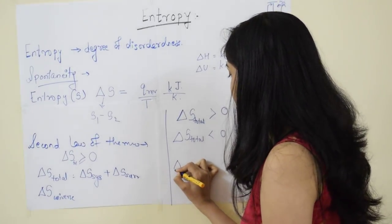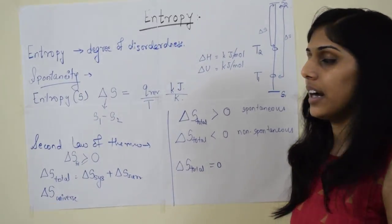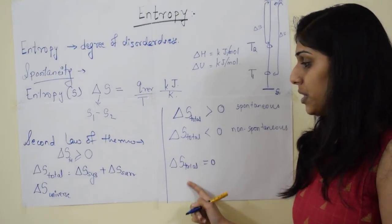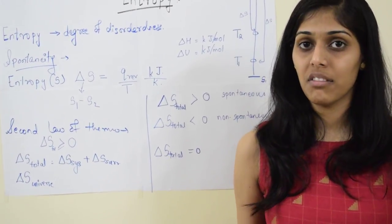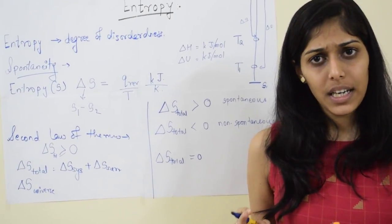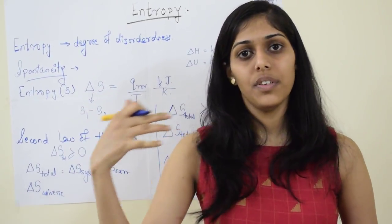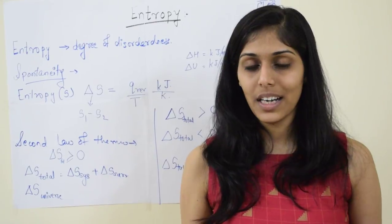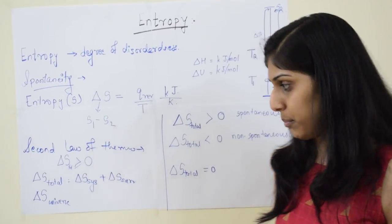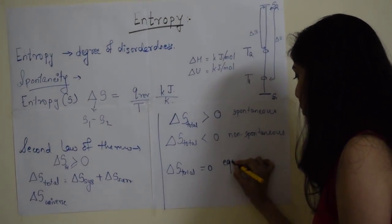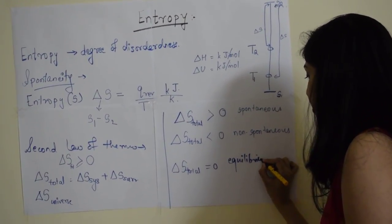When delta S total is exactly equal to 0, the system has attained equilibrium. This means the reactants are getting converted to products and the products are also getting converted back to reactants, but the rate of both is the same. So the net reaction stops at that point — when delta S total equals 0, the reaction is at equilibrium.